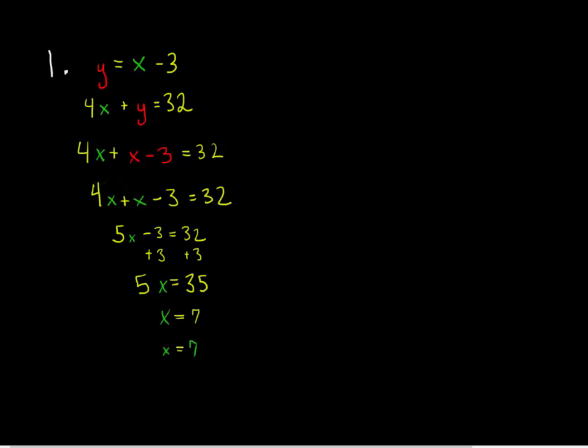Now, since I know that x is equal to 7, I can use that value in either of the first two equations to find the value of y, again, by using substitution. Instead of writing y equals x minus 3, I'll write y equals 7 minus 3. And of course, 7 minus 3 is equal to 4. So the solution to this system is the ordered pair (7, 4).